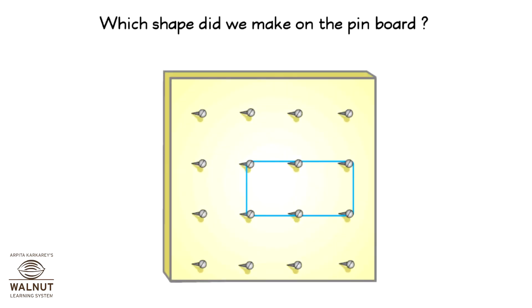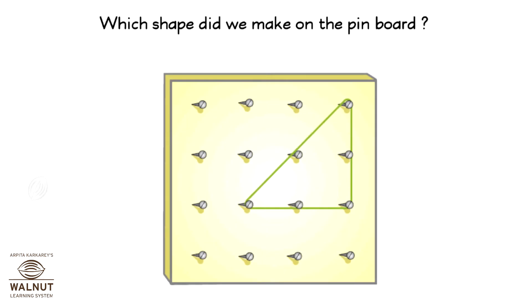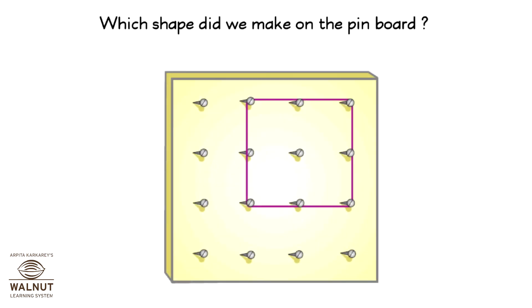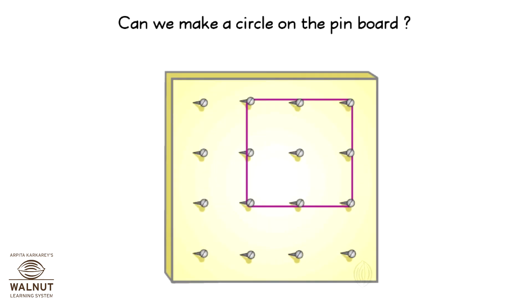Which shape did we make on the pin board? Rectangle. Which shape did we make on the pin board? Triangle. Which shape did we make on the pin board? Square. Can we make a circle on the pin board? No.